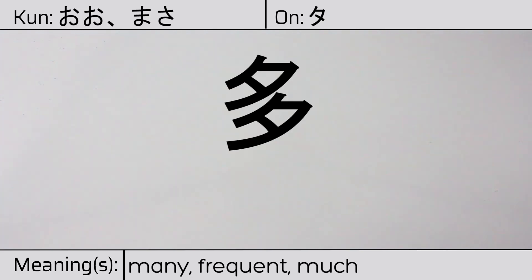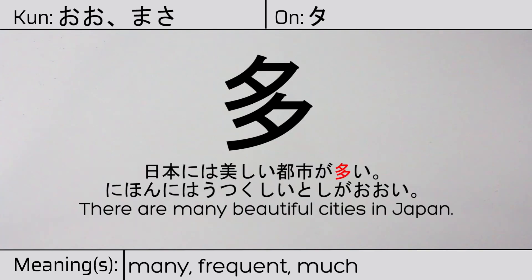Our example sentence is: 日本には美しい都市が多い — There are many beautiful cities in Japan.